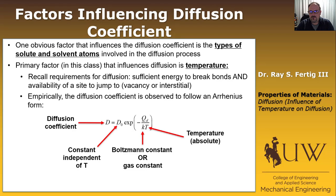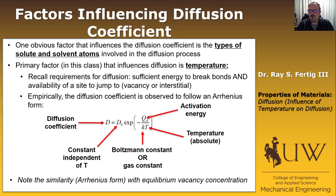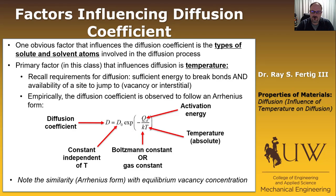T is temperature — remember it's the absolute temperature, so use Kelvin. Q is the activation energy, just as we had for vacancies. The form here is very similar to the equilibrium vacancy concentration equation, and in fact this Arrhenius form crops up everywhere in materials science. When in doubt about the functional form for a particular phenomenon, this is always a good starting guess.